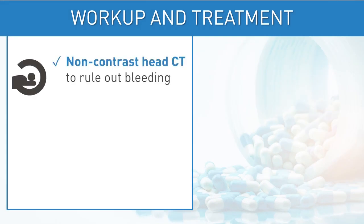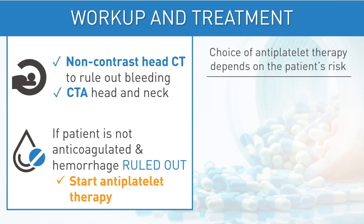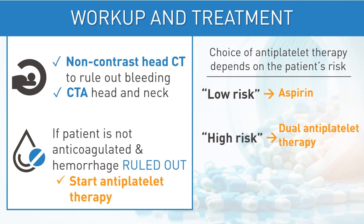A non-contrast head CT should be ordered to rule out any bleeding. A CTA head and neck can also be obtained at this time. If the patient is not otherwise anticoagulated and a head CT rules out hemorrhage, antiplatelet therapy should be started pending the remainder of the workup. The choice of antiplatelet therapy depends on the patient's risk of stroke: low-risk patients should be started on aspirin, while high-risk patients should start dual antiplatelet therapy with aspirin and clopidogrel or ticagrelor.